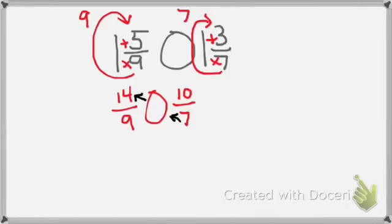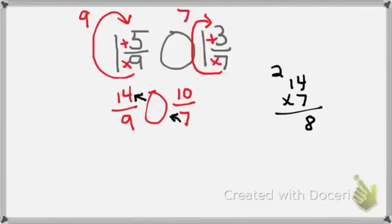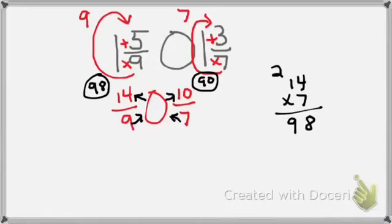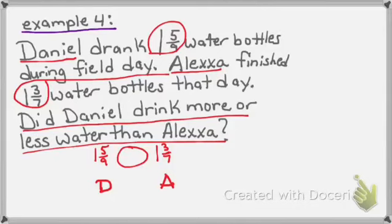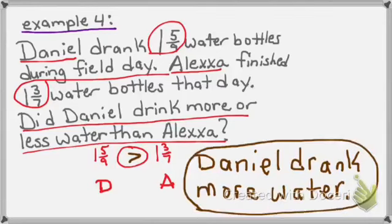I'm going to do 7 times 14 — I'll use scrap paper. 7 times 4 is 28, carry the 2; 7 times 1 is 7, plus 2 is 9. This will be 98 — circle it. On this side I have 9 times 10, which is 90 — circle it. 98 is greater than 90. Going back to my original problem: my answer was greater than, so Daniel drank a greater amount than Alexa. The question said did Daniel drink more or less water than Alexa? Daniel drank more water. That's my final answer.